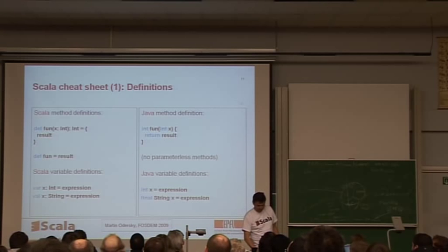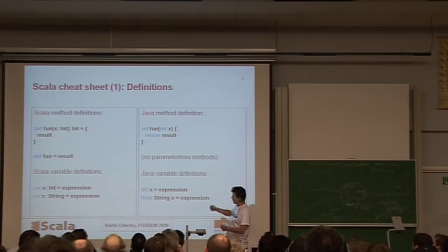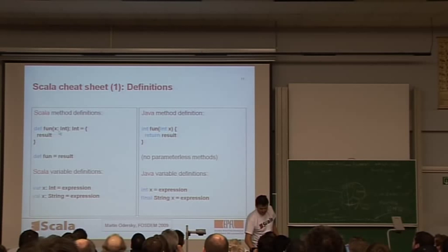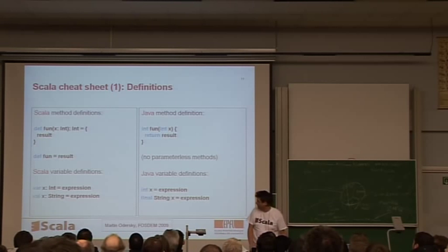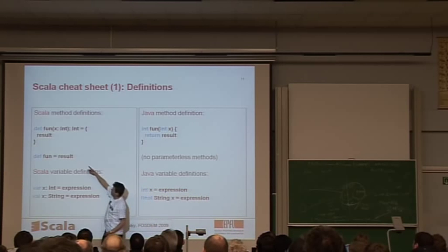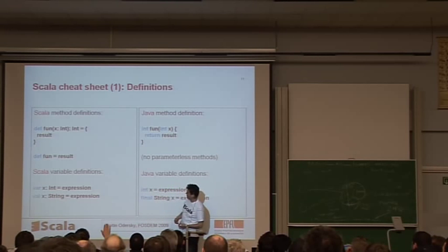So first thing here is you have a method definition. On the right side, you have the Java one, and on the left hand, you have the Scala one. So you see that there's a special keyword called def, which starts a method. The parameters, the type of the parameter is reversed. So it's x colon int instead of int x. And you don't need to have a return. Instead, every expression on the right hand side, the last expression of the statements on the right hand side is automatically returned as a result. And there's a special form of functions that don't take any parameter at all. That's this one here, where you just write a function that when you mention the name fun, it will compute result for you every time you do that.